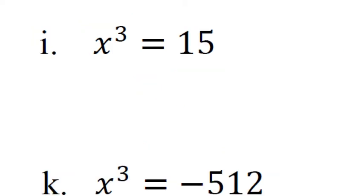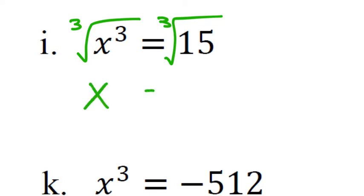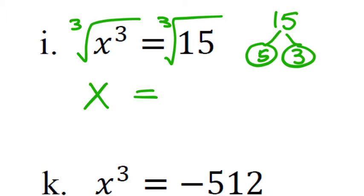Part I: x³=15. Take the cube root of both sides. Factor 15: you get 5 and 3, both prime. For a cube root, you need matching triples. There are no triples here — just one 5 and one 3 — so this stays as the cube root of 15. That is already in simplest radical form.